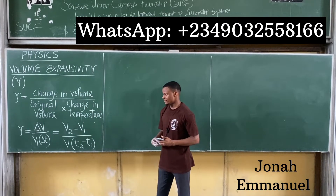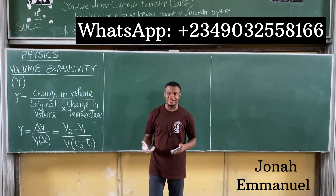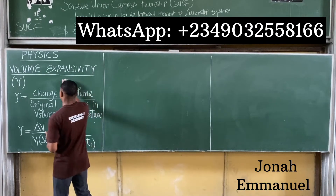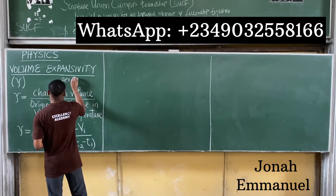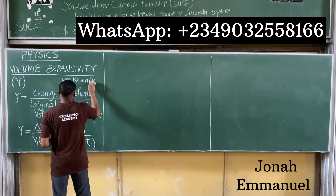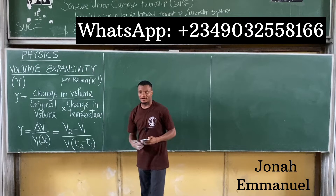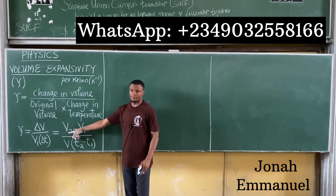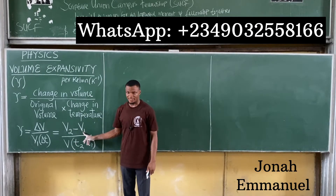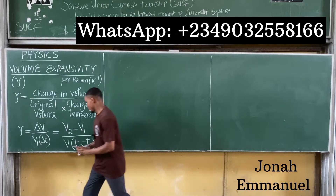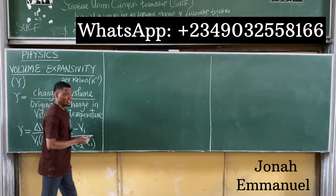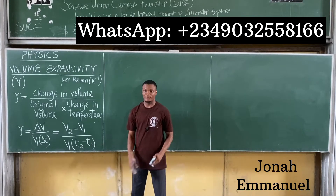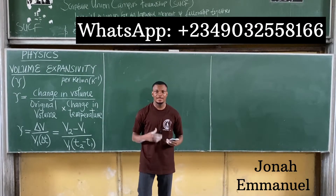Just like linear expansivity and area expansivity, the SI unit of volume or cubic expansivity is per Kelvin (K⁻¹). Here, V2 is the final volume in cubic metres, V1 is the initial volume in cubic metres, T2 is the final temperature in Kelvin, and T1 is the initial temperature in Kelvin.